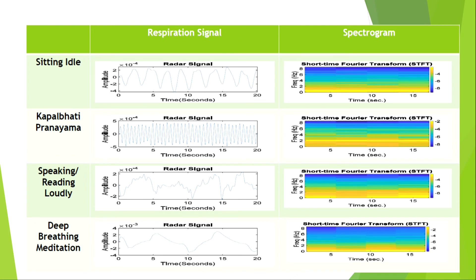These are the respiration signals along with their spectrograms. For sitting idle there is normal breathing. For Kapal Bhati Pranayama the breathing frequency is very high and forceful, and the spectrogram shows increased intensity at higher frequencies. For speaking loudly there is distortion because the person is both speaking and breathing simultaneously. For deep breathing, the frequency is low and regular.